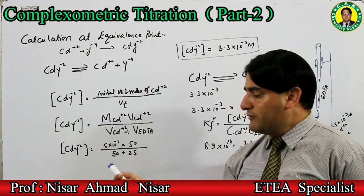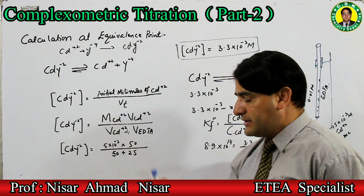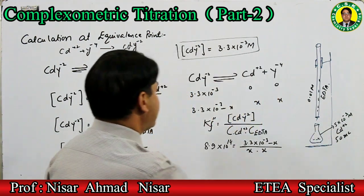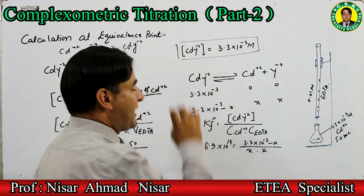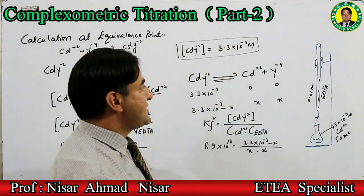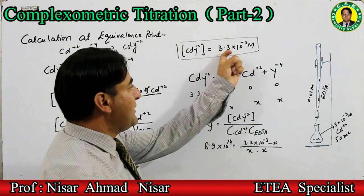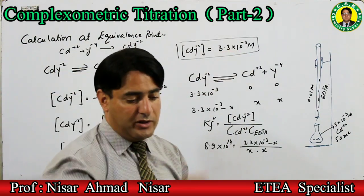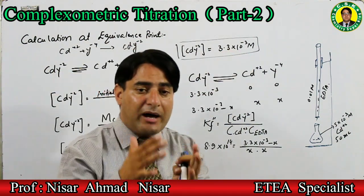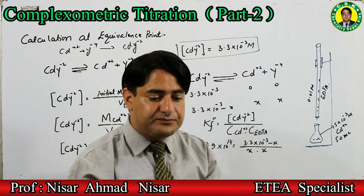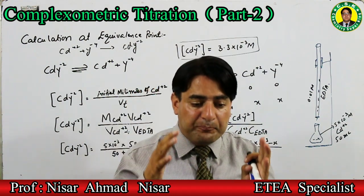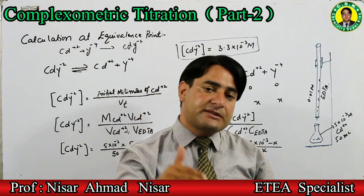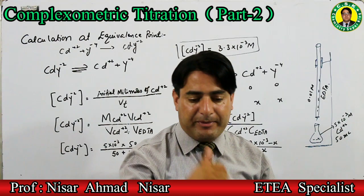Cadmium ion کا volume 50 mL تھا، 25 mL EDTA add کیا۔ جب ہم اس کو solve کریں گے تو complex کی concentration آئے گی 3.3×10⁻³ molar۔ یہ ہمارے پاس complex کی concentration ہے۔